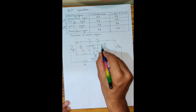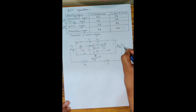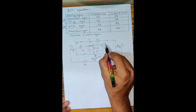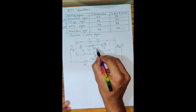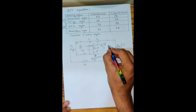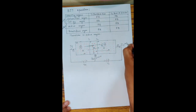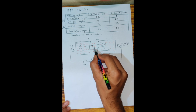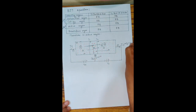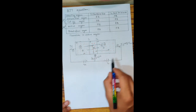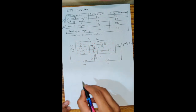The collector current IC flows opposite to the direction of electron flow — that is, into the transistor. The collector current is contributed by two components: the charge carriers coming from emitter to collector, and the minority charge carriers moving from base to collector. Therefore, IC = α×IE + ICO, where ICO is the reverse saturation current.